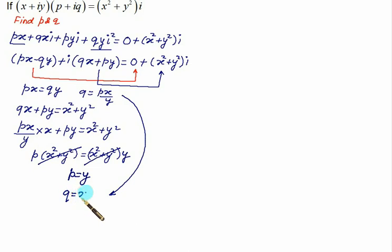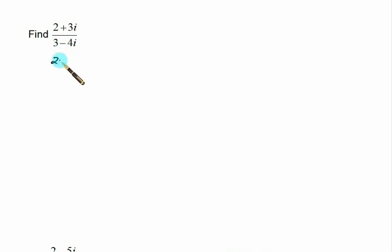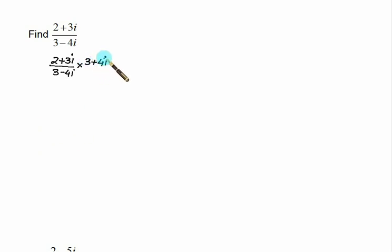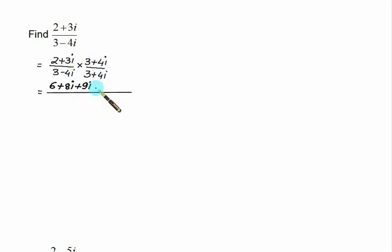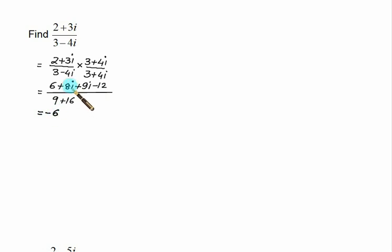Now take a division problem: find (2 + 3i)/(3 - 4i). Multiply numerator and denominator by the conjugate of the denominator, which is 3 + 4i. The numerator becomes: 2×3 = 6, plus 8i, plus 9i, plus 12i²= -12. The denominator becomes 3² + 4² = 9 + 16 = 25. Combining the numerator: 6 - 12 = -6, and 8i + 9i = 17i, giving (-6 + 17i)/25, which equals -0.24 + 0.68i.